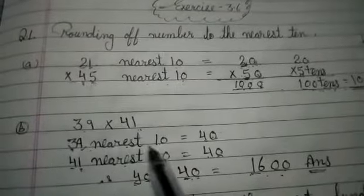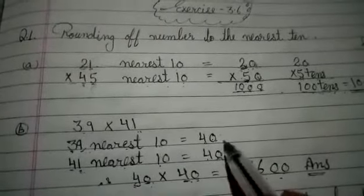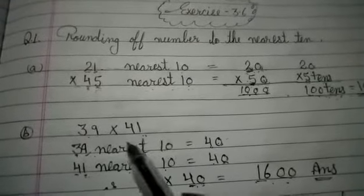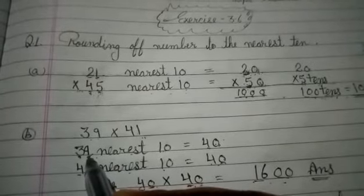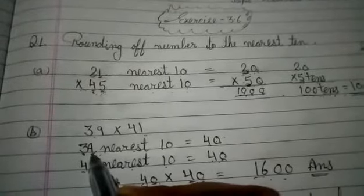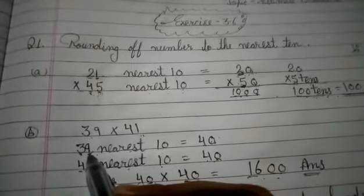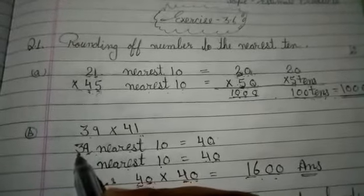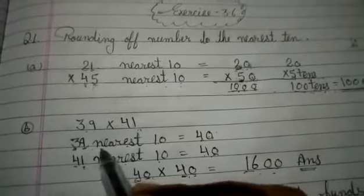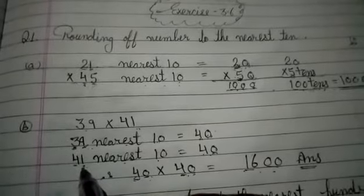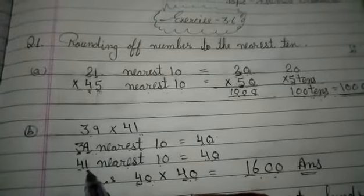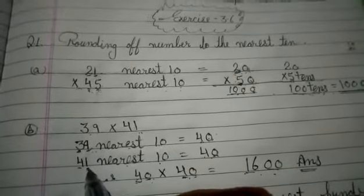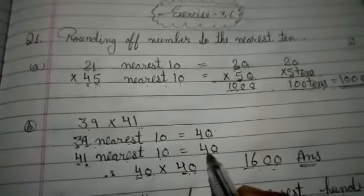Next example: 39 multiply by 41. First find the nearest 10. For 39, write 0 on the ones place and check: ones digit is 9, and 9 is more than 5, so add 1 to the next digit — 3 plus 1 is 4. So 39 rounds to 40. For 41, write 0 on ones place and check: ones digit is 1, which is less than 5, so write the next digit as it is — 4. So 41 rounds to 40.